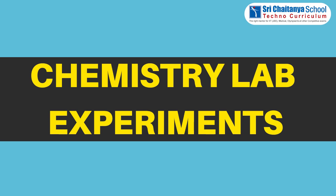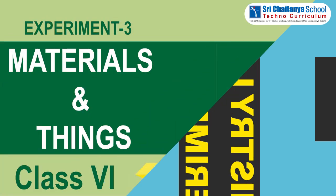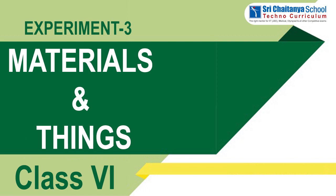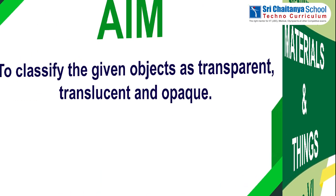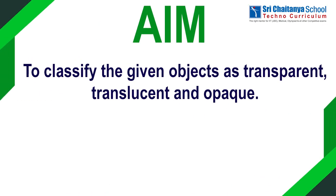Hi students, now we are going to do a chemistry lab experiment based on materials and things for class 6th standard. The aim of this experiment is to classify the given objects as transparent, translucent and opaque.